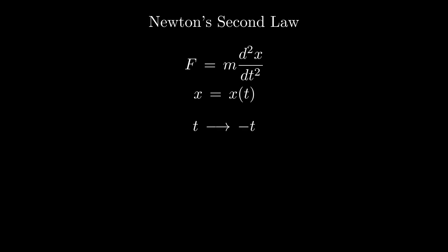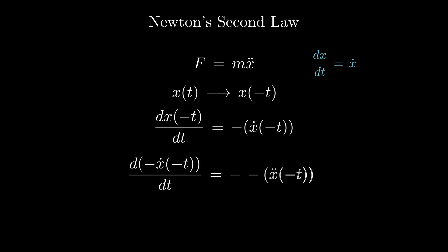What happens if we replace t by minus t, thus considering the same system moving backwards in time? By convention, derivative with respect to time is represented by a dot. The first derivative is minus x dot of minus t by chain rule. We calculate the second derivative using chain rule again and get minus minus x double dot, which is just x double dot of minus t.